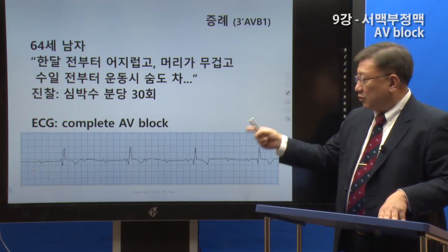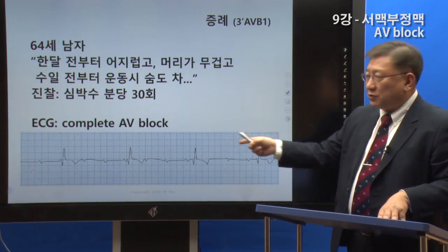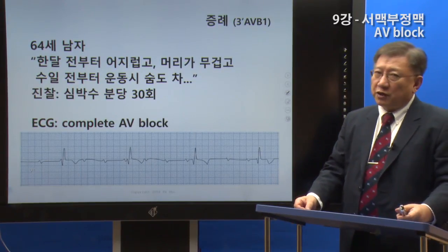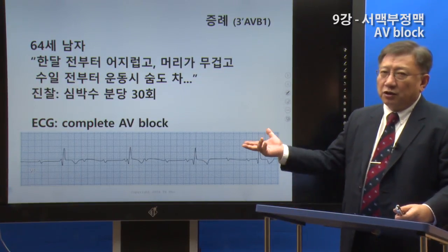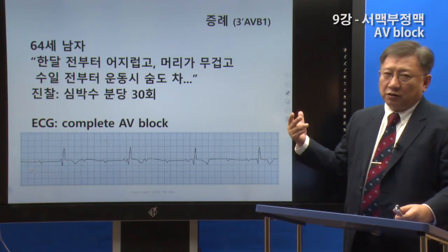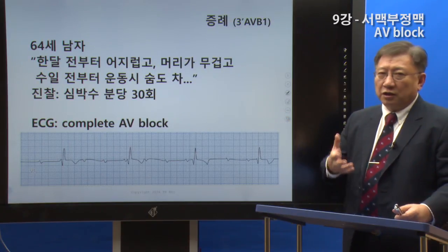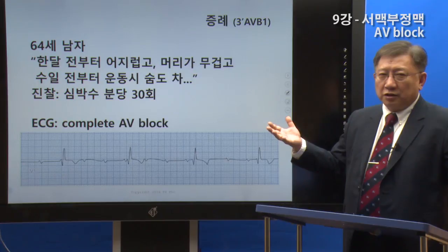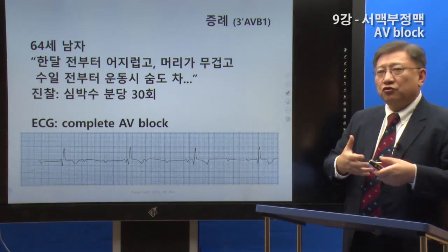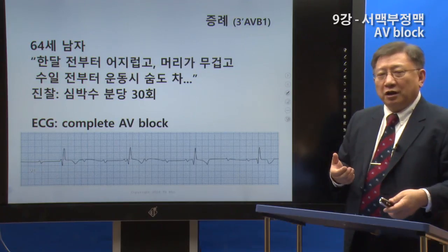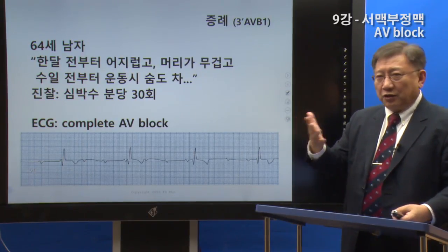He had shortness of breath. His heart rate was 30 beats per minute. The normal heart rate is 60-100, but this patient's heart was beating at half the normal rate. With such a low rate, the brain may not receive adequate oxygen and blood pressure may drop.